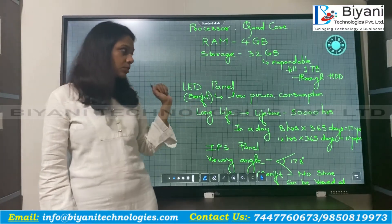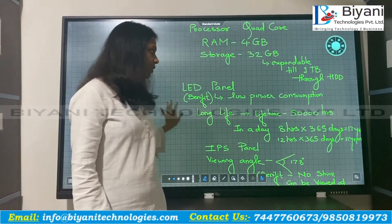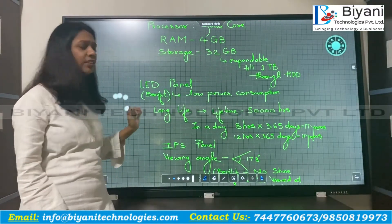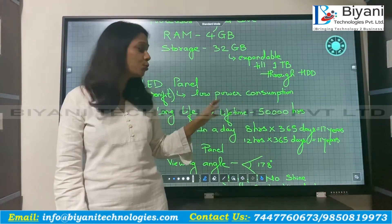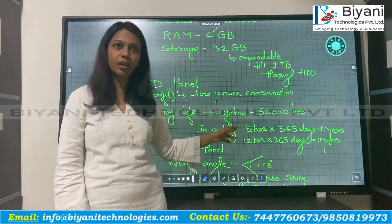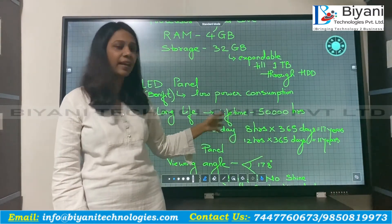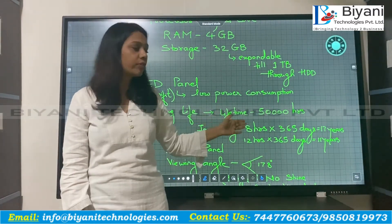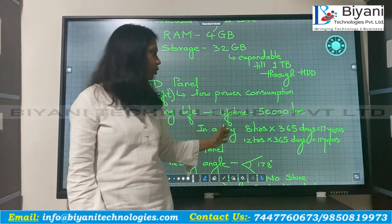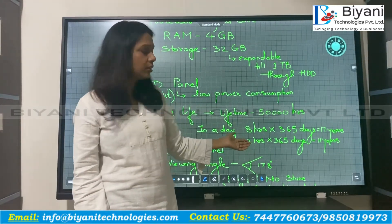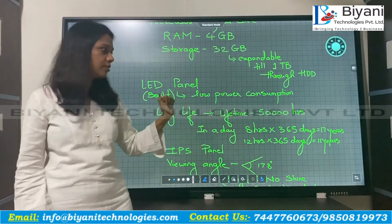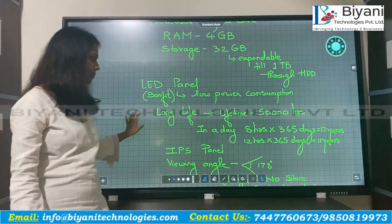By 50,000 hours — if we calculate — even if in a day you are going to use the panel for 8 hours continuously, the panel will run for about 17 years. If you are going to use it for 12 hours continuously, you will get a lifetime of approximately 11 years.